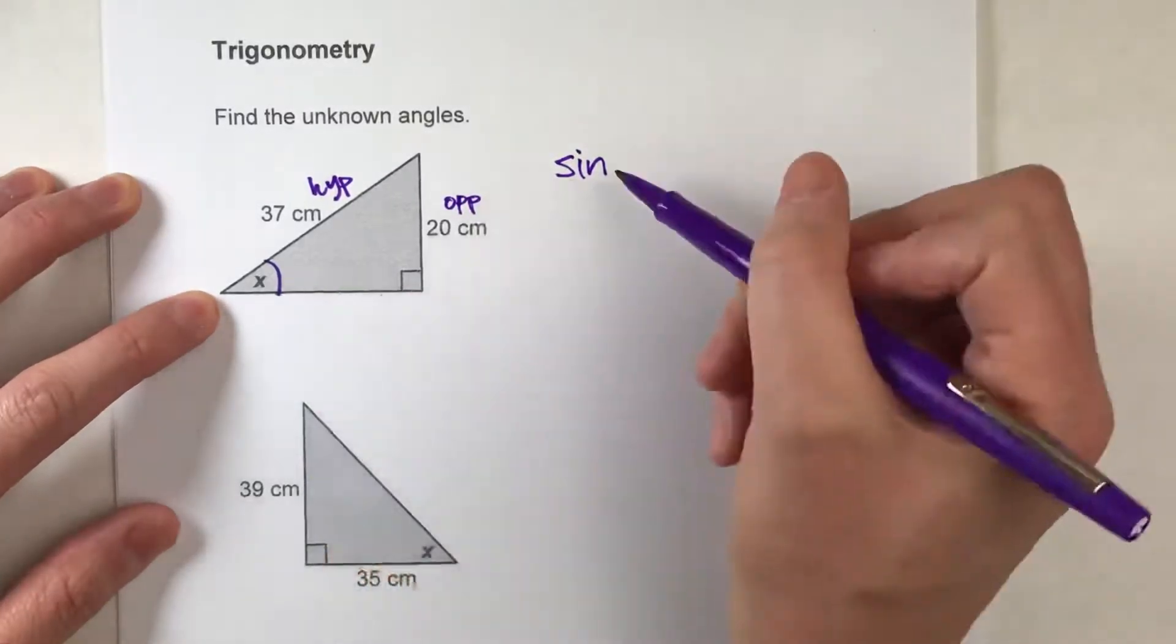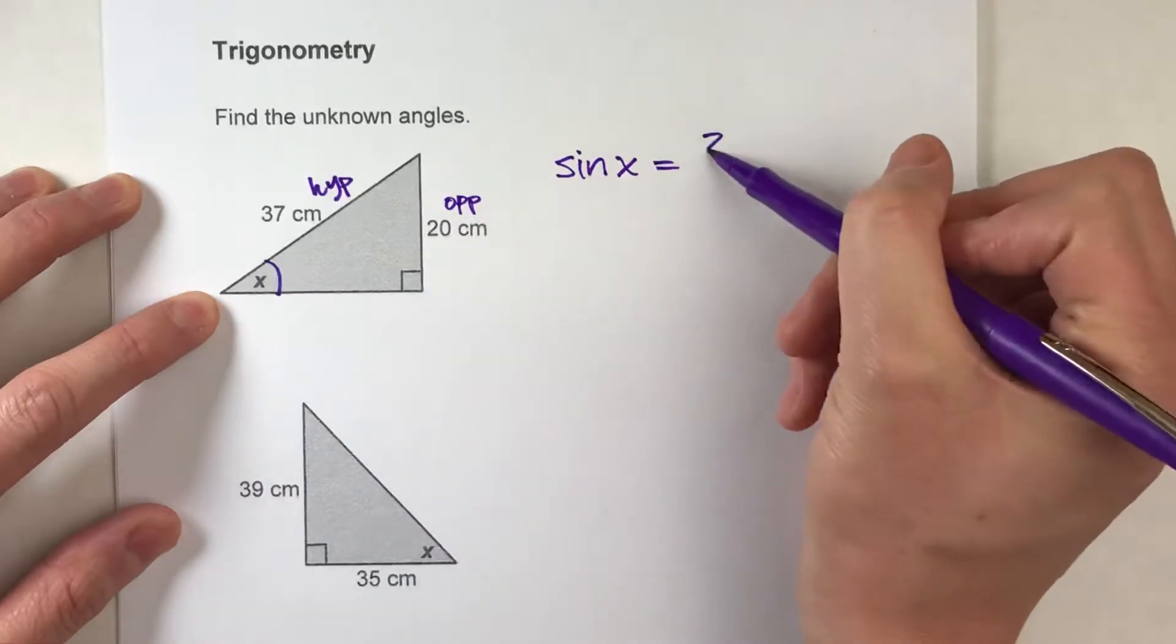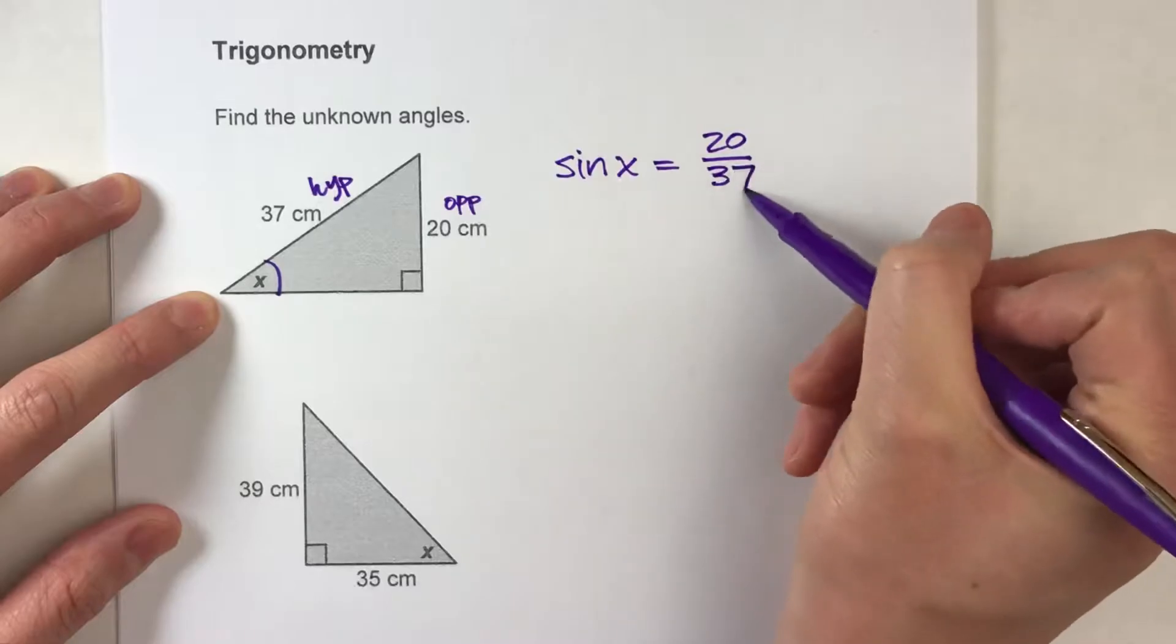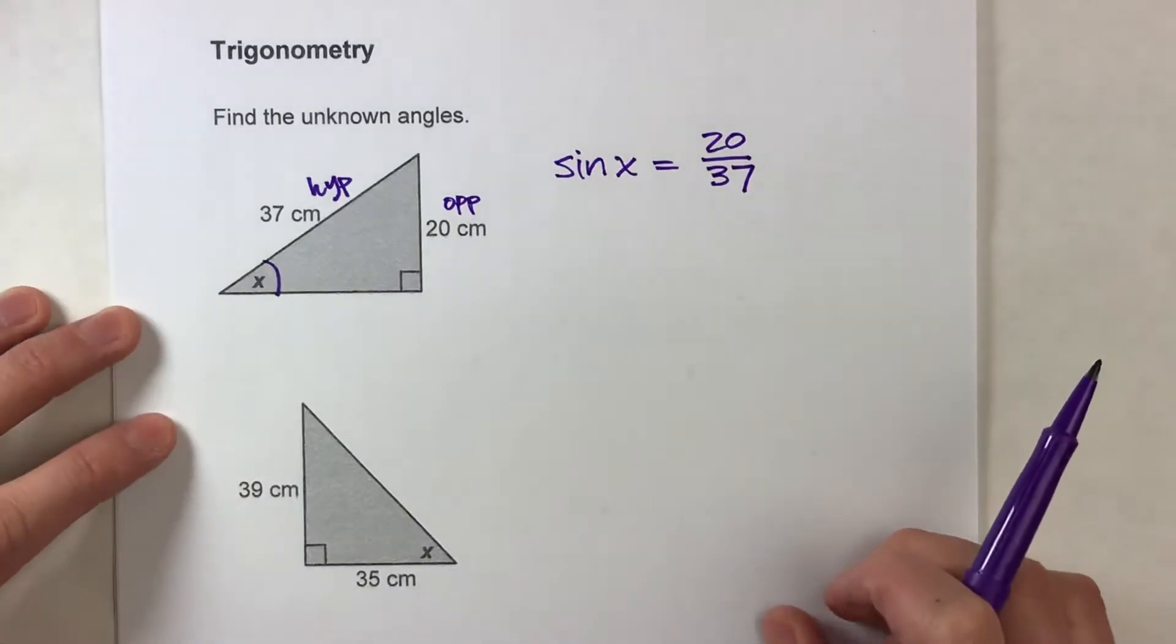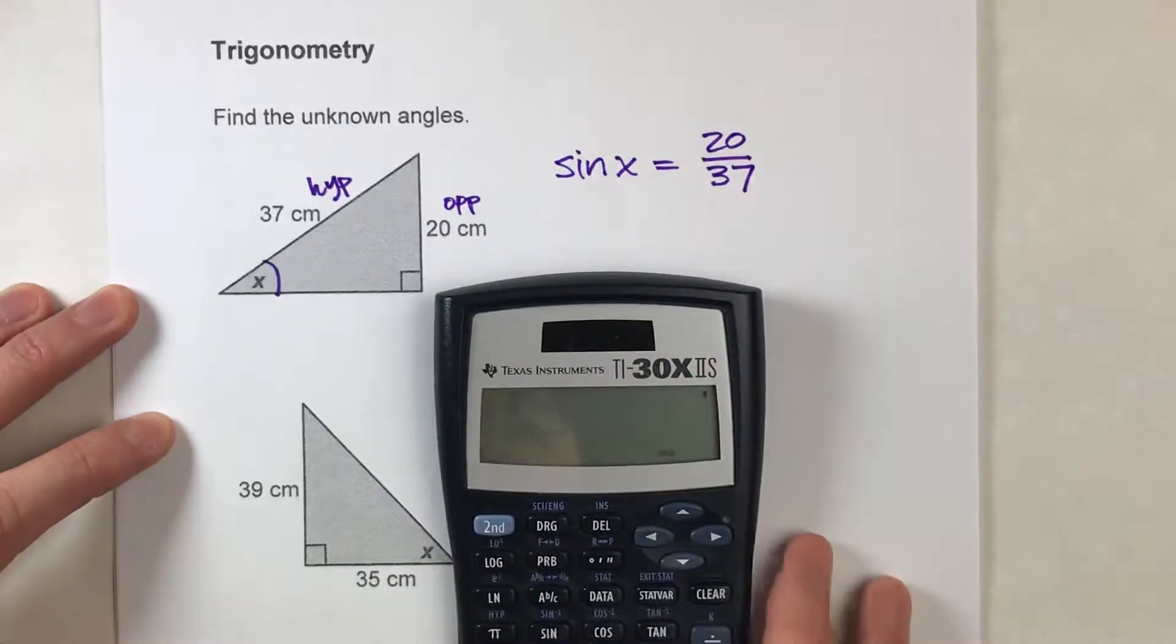So the sine of angle x is equal to the opposite side divided by the hypotenuse. Now here's the thing. We can use our calculator to figure this answer out.